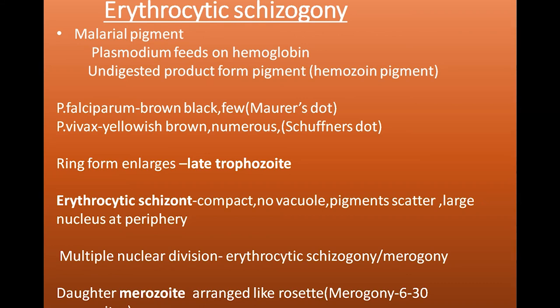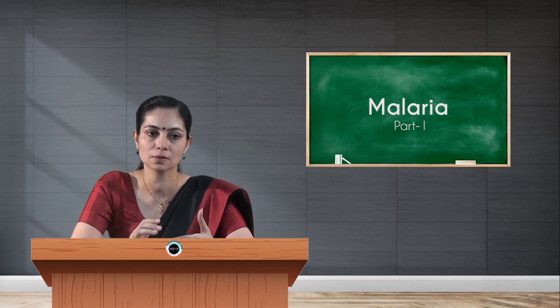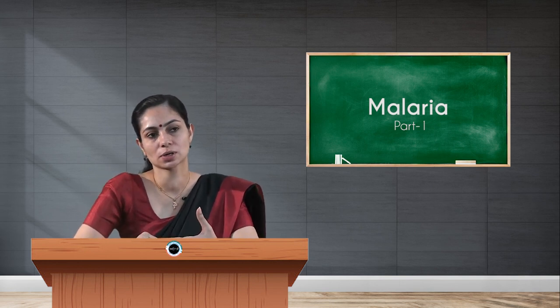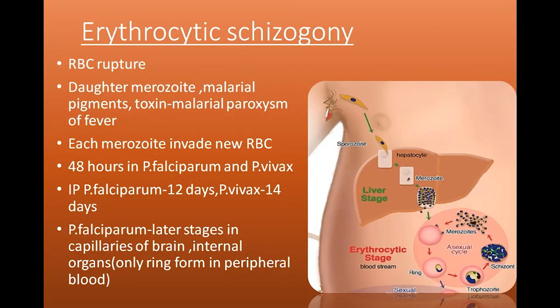The early ring stage becomes the late trophozoite stage, which then undergoes erythrocytic schizogony — forming a compact structure with scattered pigments and a large peripheral nucleus — resulting in 6 to 30 merozoites. These merozoites, along with malarial pigment and toxins, are released when the RBC ruptures, leading to malarial paroxysm: the fever that occurs when merozoites invade new RBCs or break out of them.